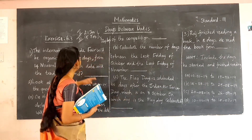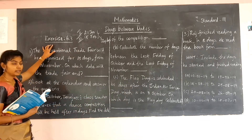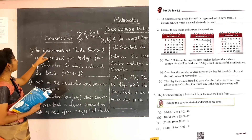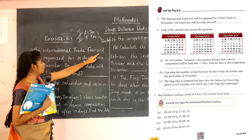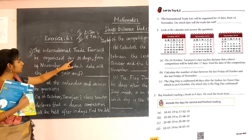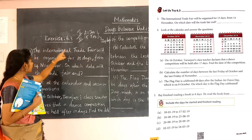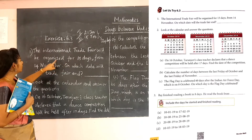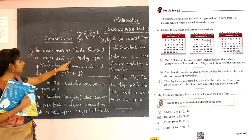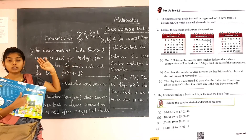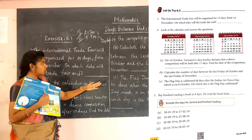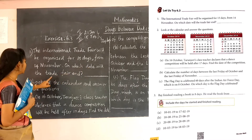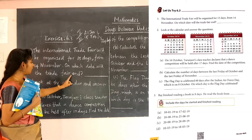Now we are going to try exercise problem 6.3. The first question says: the international trade fair will be organized for 13 days. From 14 November, on which date will the trade fair end?